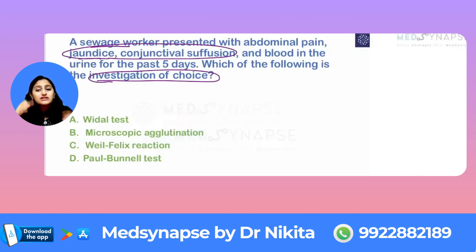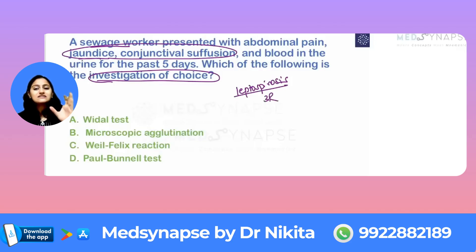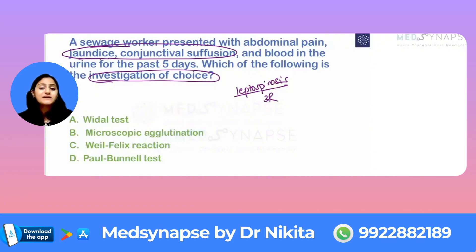Whenever jaundice or conjunctival suffusion is given together with a sewage worker, you think of leptospirosis. Remember the three R's: Rats, Rains, Rice field — this is leptospirosis.